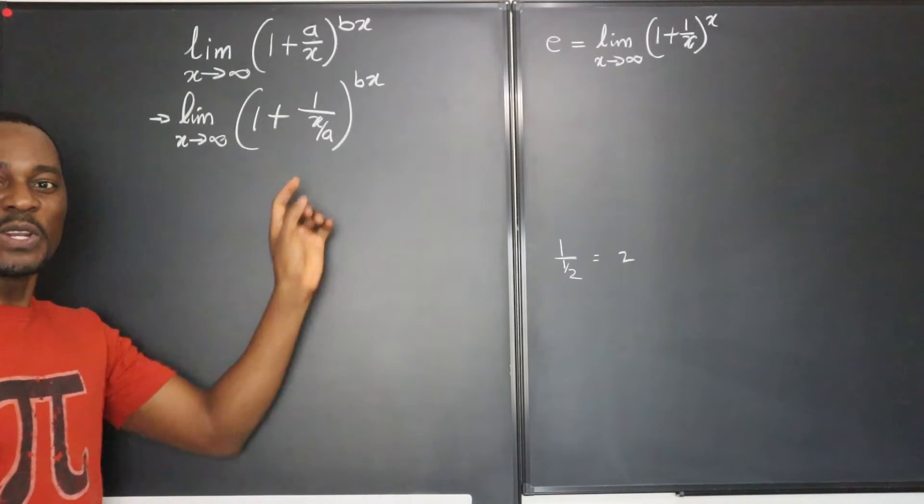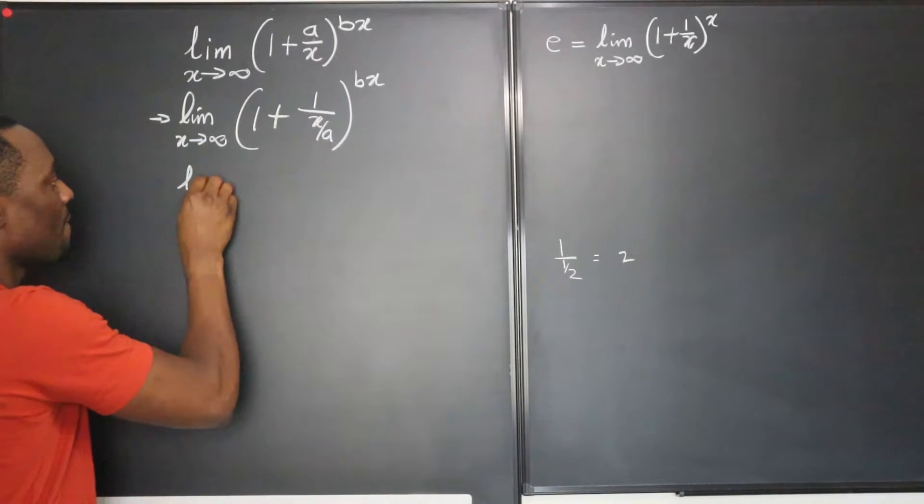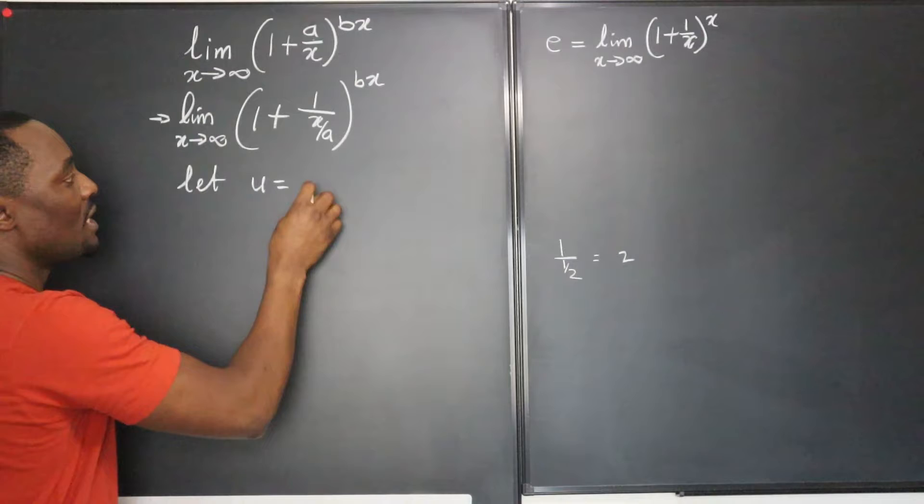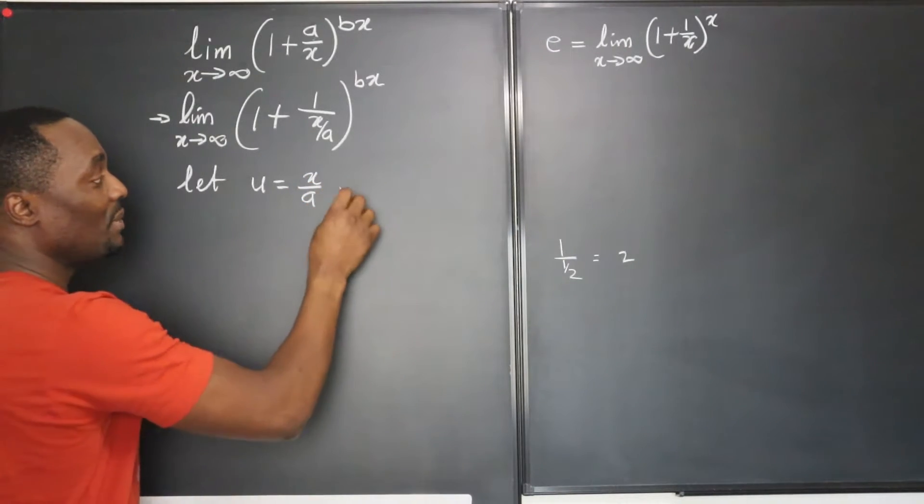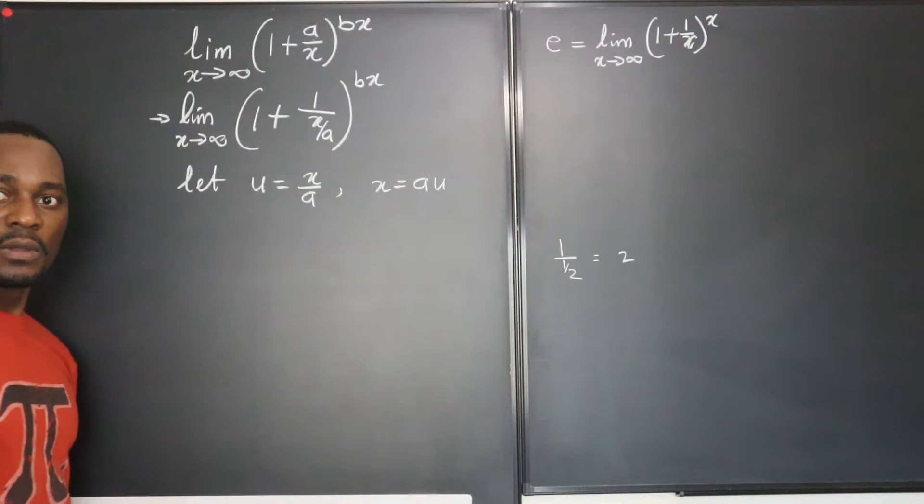Now we don't want to keep writing this, so let's look for one letter to represent x over a. So we say let u be equal to x over a and that simply means that x will be equal to a times u.